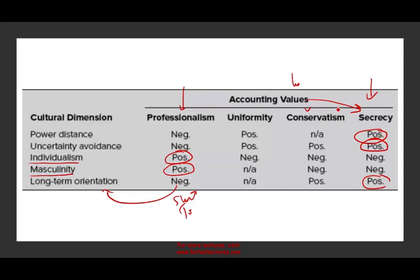You can also look at uniformity in a similar way. Those are basically the cultural dimensions of Hofstede in conjunction with the accounting values. Many studies have been conducted — this is not meant to be a definitive scientific method, but to give you an idea so that if you are dealing with an international situation, you have a sense of how different cultures value different things.